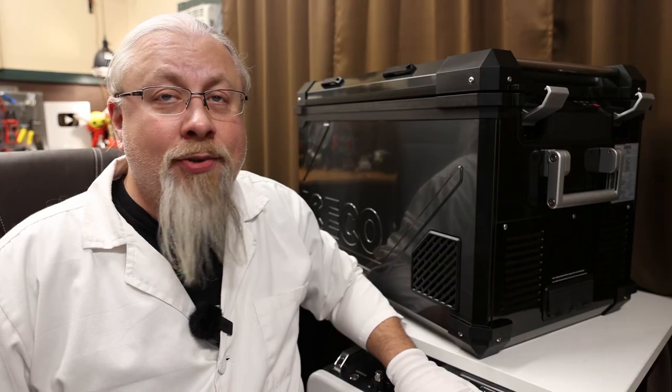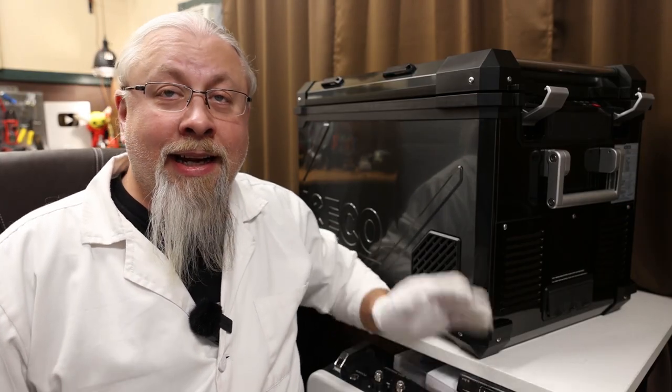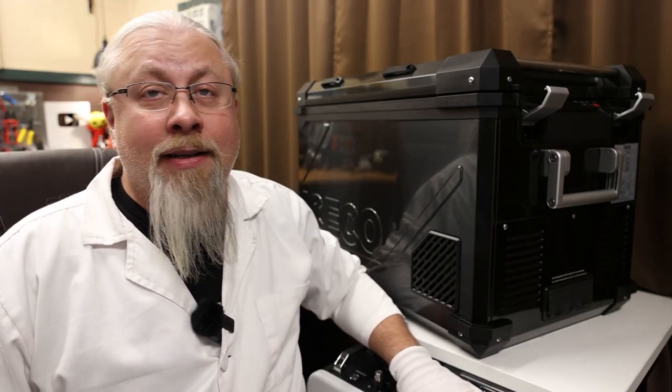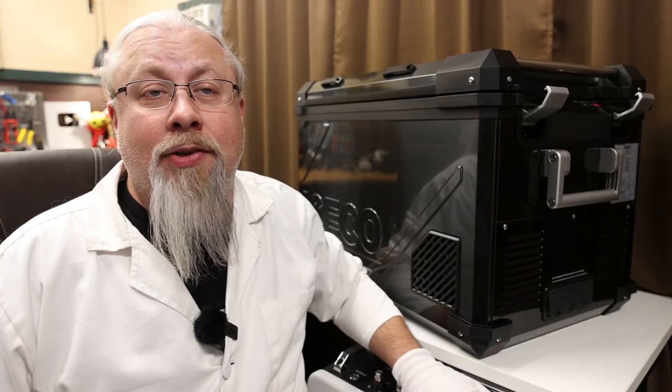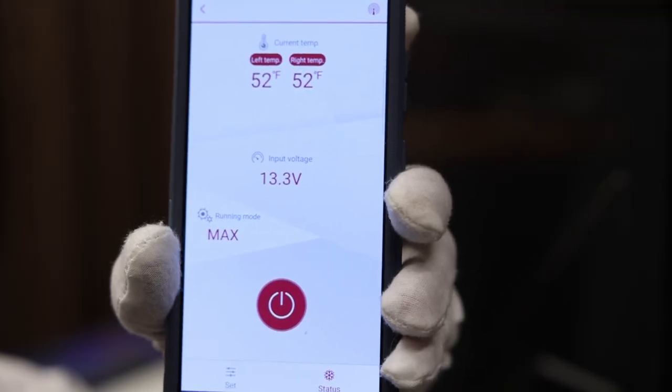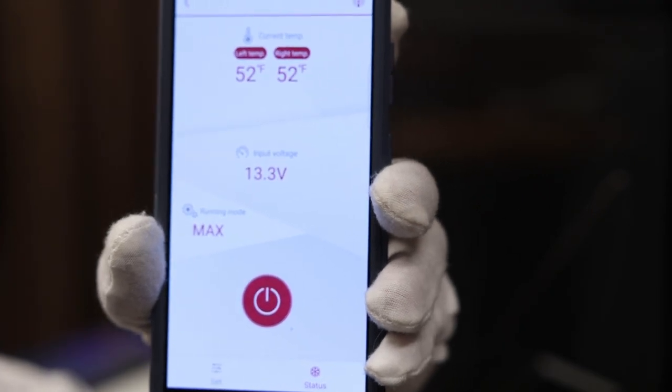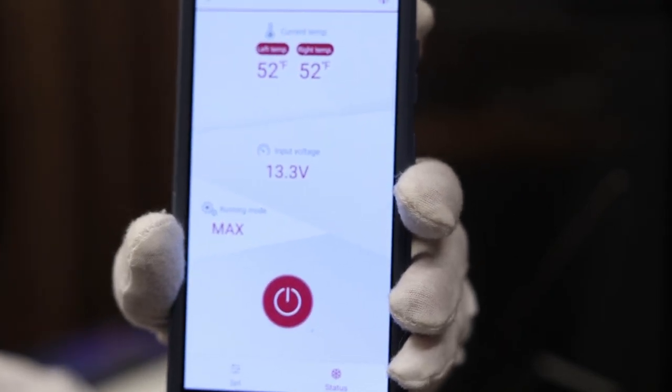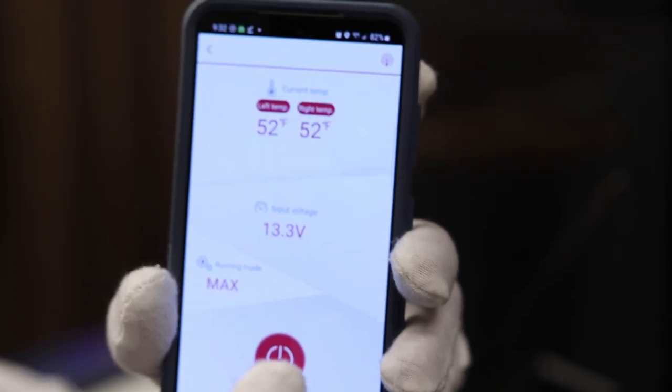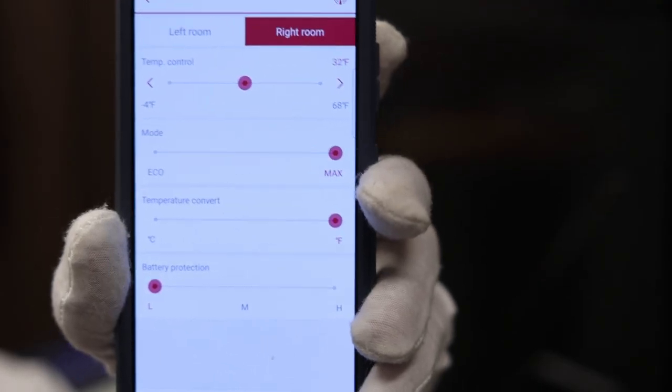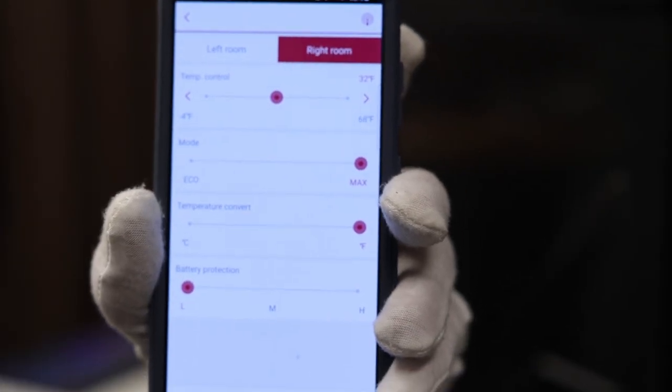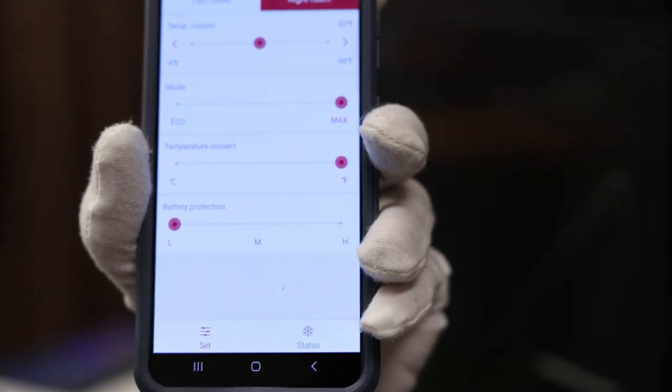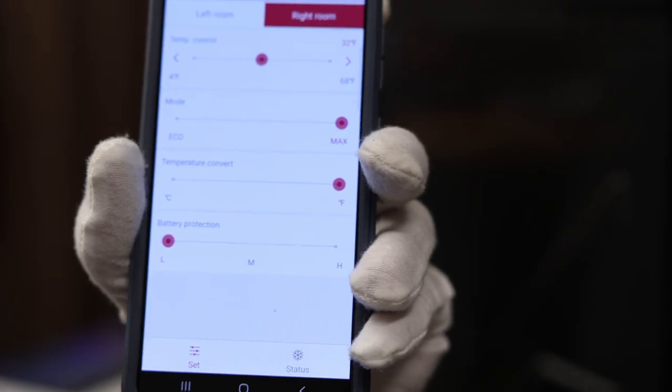Of course, Iceco now offers an app just like everybody else seems to have an app nowadays. It lets you remotely control the refrigerator from within Bluetooth range. This is not a Wi-Fi app, it is Bluetooth only. It doesn't require an account or anything to set up, so all you have to do is install the app on your phone and you can control the refrigerator directly. Let's go ahead and check that out. This fridge app is extremely simple. You have your two zones at the top, you have the voltage of the battery in the middle, whether you're in max or eco mode, and this big red button here turns the refrigerator on and off. Down at the bottom you can click on settings and it takes you to the left and right side of the fridge where you can set the temperature. You can set the mode to eco or max, and you can also set it to Celsius or Fahrenheit, and you can also set the battery protection to low, medium or high. And that's all she wrote.